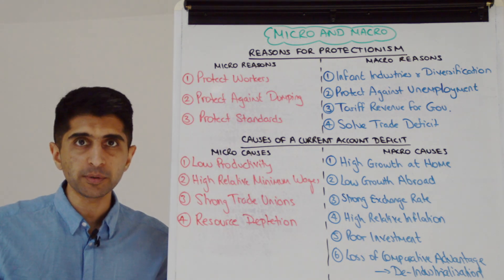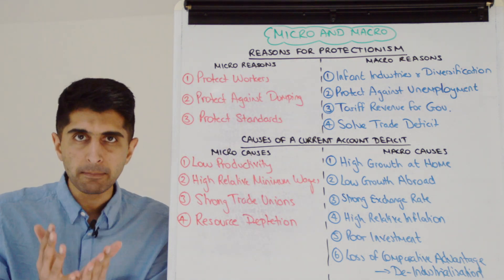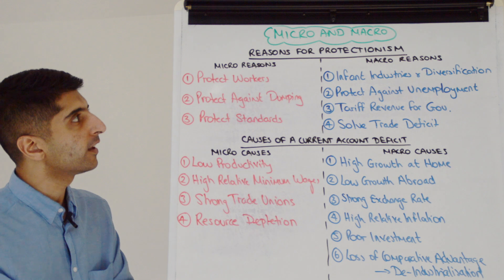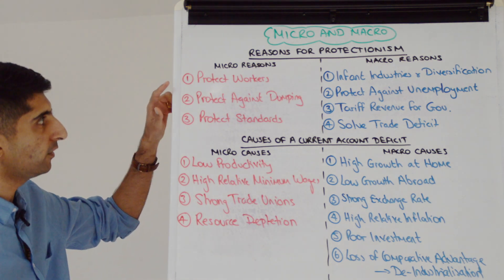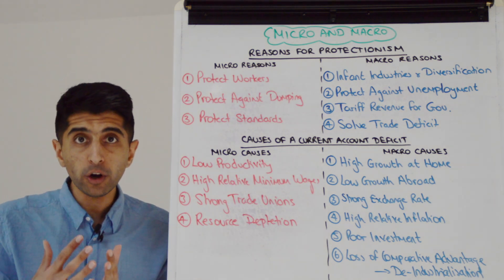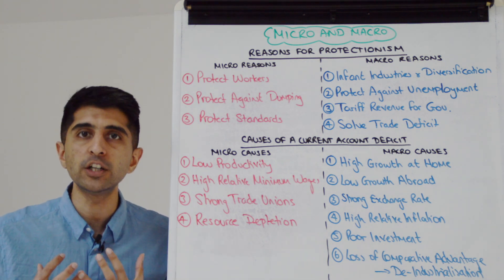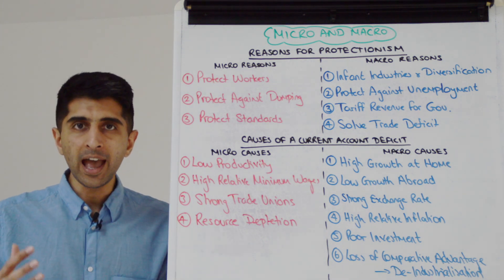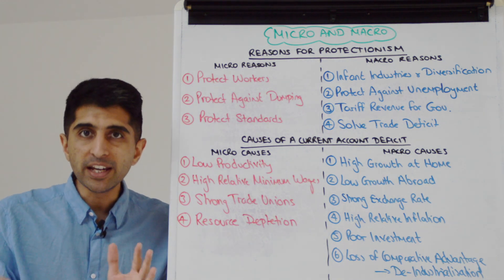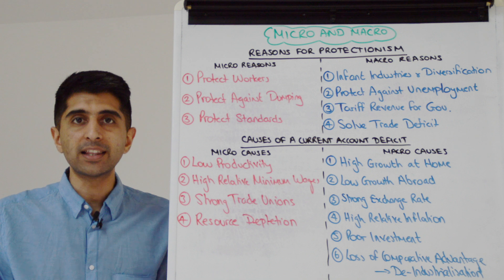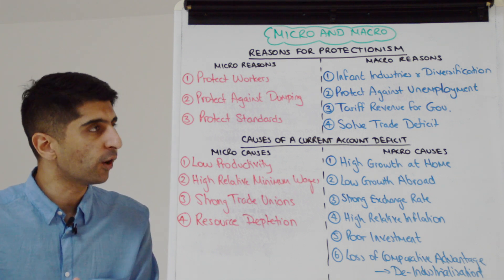Let's take reasons for protectionism and look at micro and macro reasons we can bring in here. Starting with micro reasons for protectionism: we can talk about protecting workers. You have to focus on the individual workers and how their living standards are promoted, their wages are protected, and their family outcomes are protected.